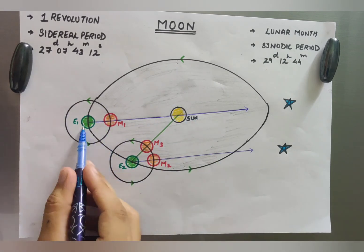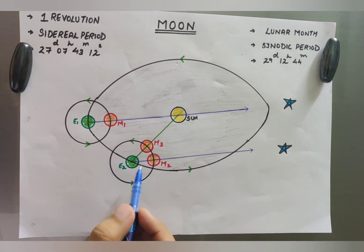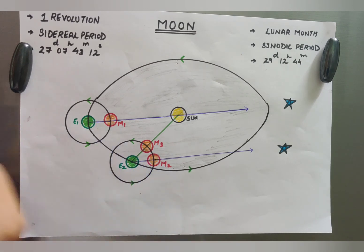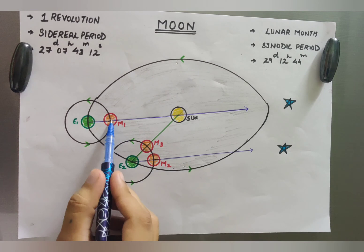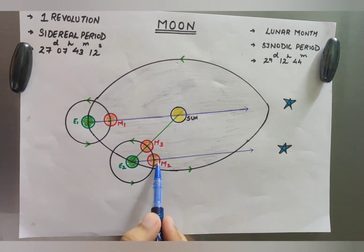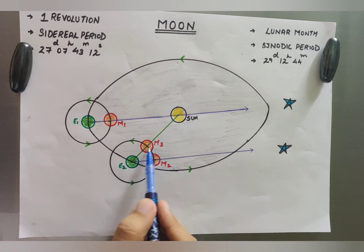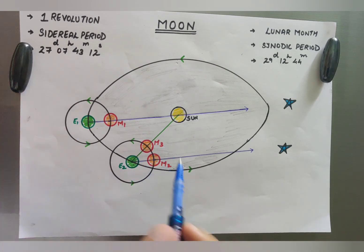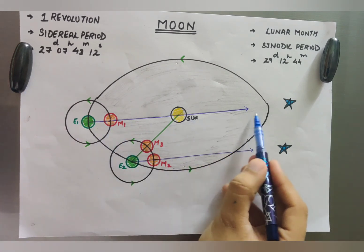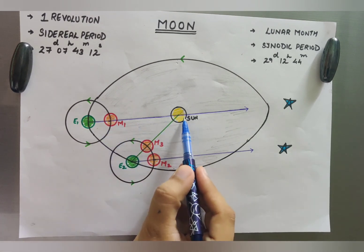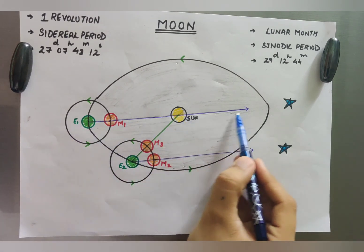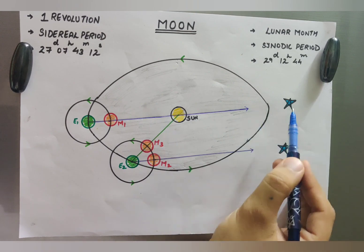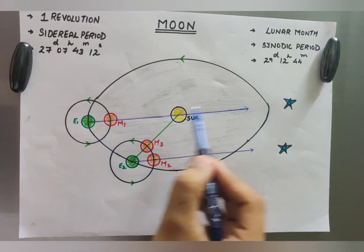Now when the earth moves and shifts to position E2, what happens? M1 becomes M2. The moon goes around the earth and when it comes back to M2, or when it is in line with the sun, it completes one revolution. Now let's assume moon and sun are in conjunction with each other and point in a direction toward a star at infinity. The distance from earth to star is too much, so this star is basically used to define a direction.